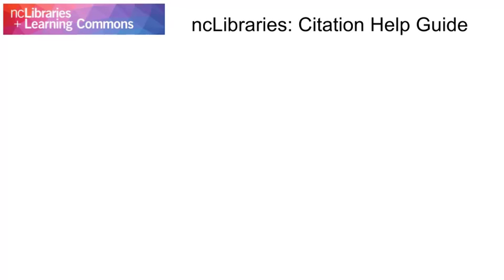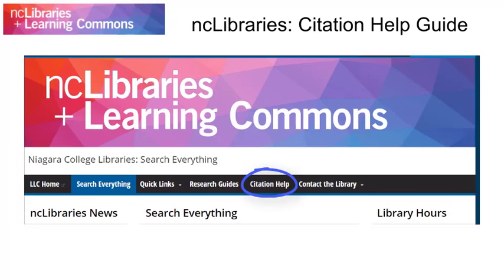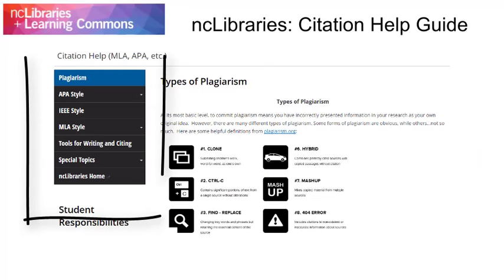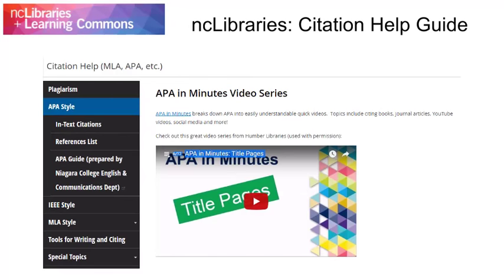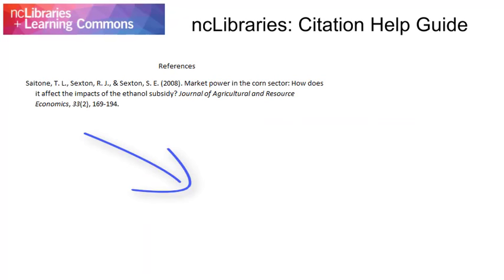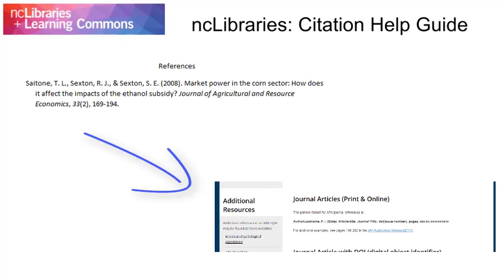You can find examples of what citations should look like in our citation help guide. To find this guide, go to niagaracollege.ca/library, and then choose the citation help button at the top of the next page. The most commonly used citation styles are each featured separately in this guide. For example, if you open the APA style page, you'll find links to some helpful APA-specific style guides, as well as a page of in-text citation examples and references list examples. You can compare these examples to any citations you have created to make sure there are no errors.